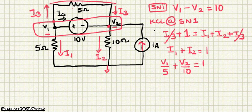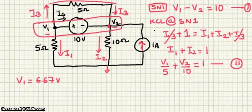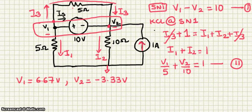Now we have two equations. Equation 1: V1 minus V2 equals 10. Equation 2: V1 over 5 plus V2 over 10 equals 1. Solving these two equations, we get V1 equals 6.67 volts and V2 equals minus 3.33 volts. You can solve these by hand, calculator, or using a program such as MATLAB.